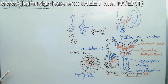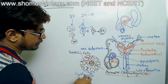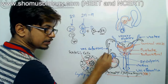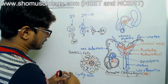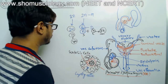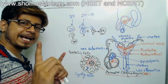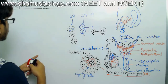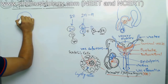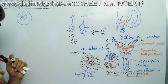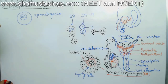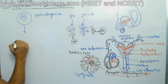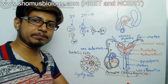Spermatogenesis takes place in the seminiferous tubule, which is part of the testis lobules. Inside the seminiferous tubule there are two types of cells: Sertoli cells and spermatogonium. The spermatogonium is actually the male gamete progenitor cell. The spermatogonium carries 2n (diploid) chromosomes in the nucleus — 'spermatogonia' is the plural and 'spermatogonium' the singular.